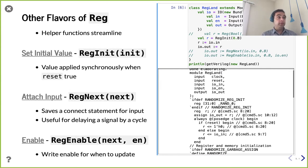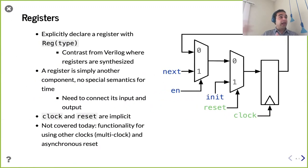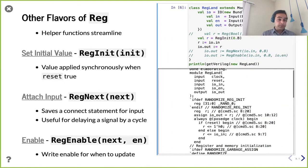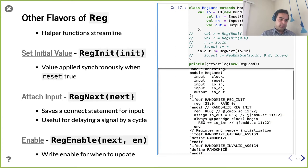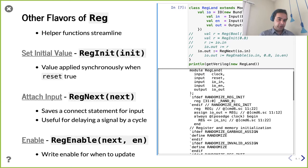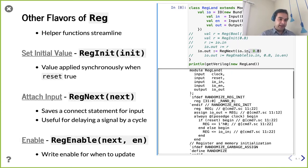Another option is RegNext, which lets you specify the source of the register's input. With RegNext, we can kind of assign the input right at the beginning. So what was roughly three lines is now one line. RegNext takes in the IO input and we assign the output of the register, all in one concise statement. That's nice.